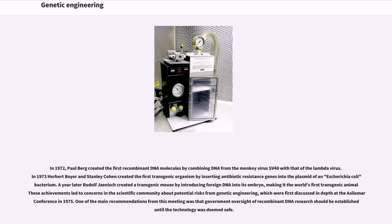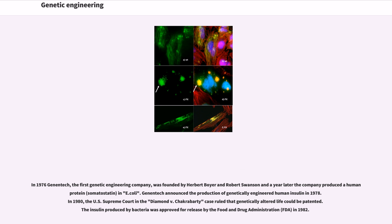In 1976, Genentech, the first genetic engineering company, was founded by Herbert Boyer and Robert Swanson, and a year later the company produced a human protein, somatostatin, in E. coli. Genentech announced the production of genetically engineered human insulin in 1978. In 1980, the U.S. Supreme Court in the Diamond v. Chakrabarty case ruled that genetically altered life could be patented. The insulin produced by bacteria was approved for release by the Food and Drug Administration (FDA) in 1982.